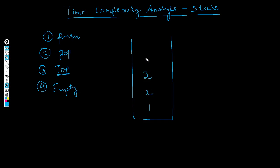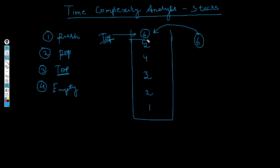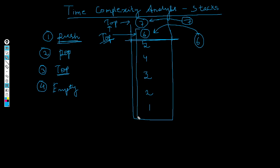Let's say we have elements one, two, three, four, and five in our stack. Now imagine we want to push another element, say six, on top. If we remember the definition of the stack, the top pointer always points to the topmost element. Whenever we push, we increment the top pointer one step up and make it point to the new element. So at worst, we are doing just a single operation while pushing into the stack.